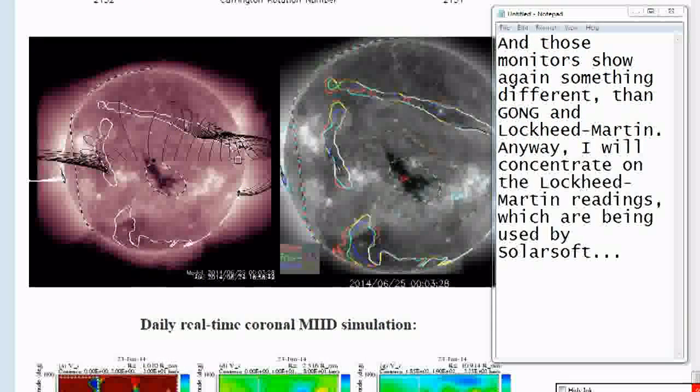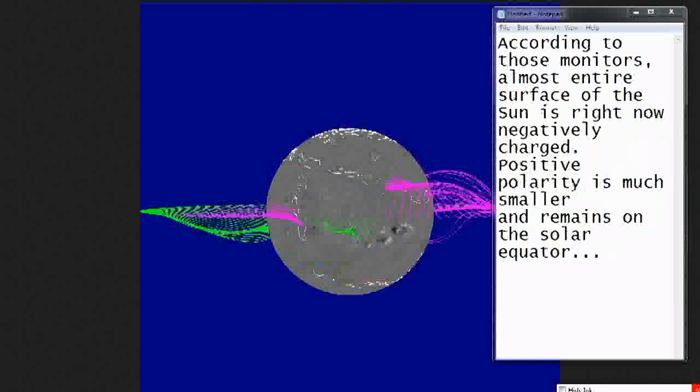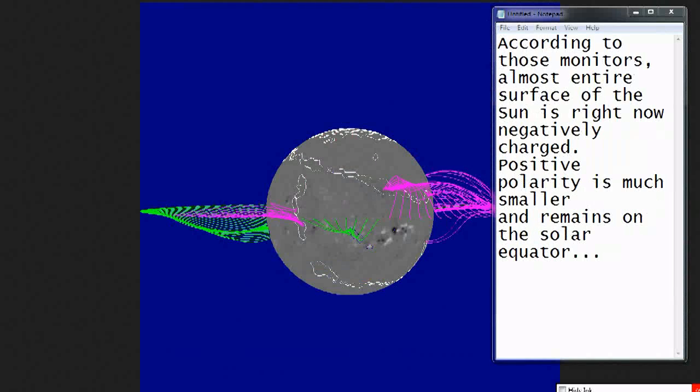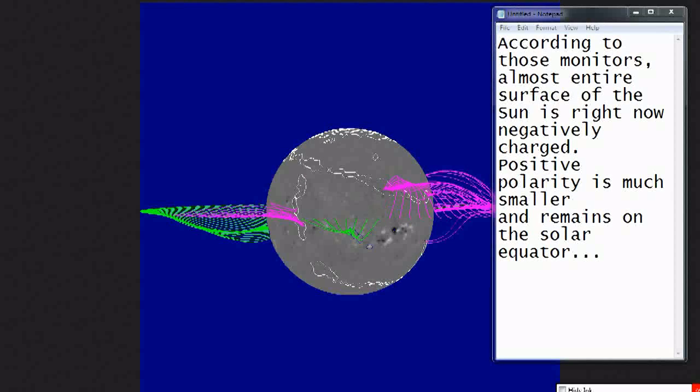Anyway, I will concentrate on the Lockheed Martin readings which are being used by SolarSoft. According to those monitors, almost entire surface of the sun is right now negatively charged. Positive polarity is much smaller and remains on the solar equator.